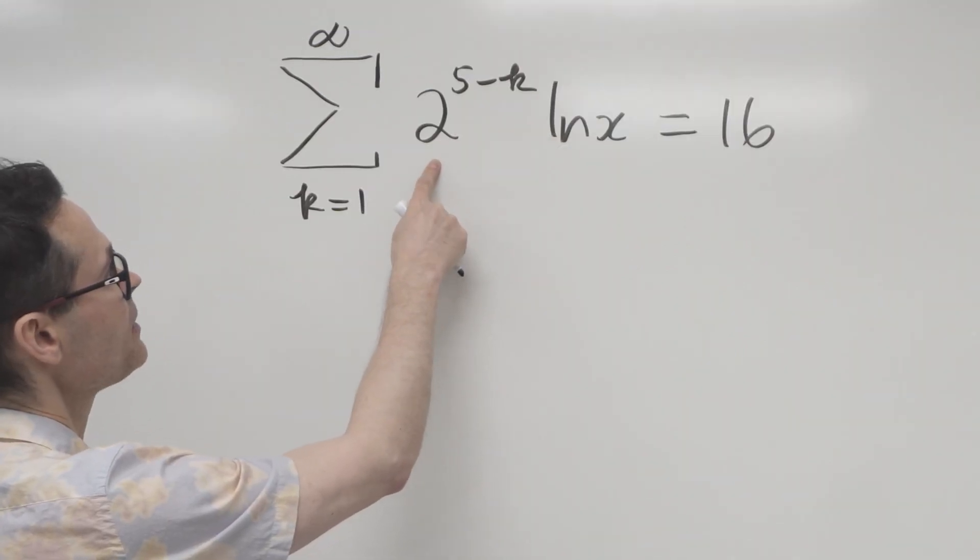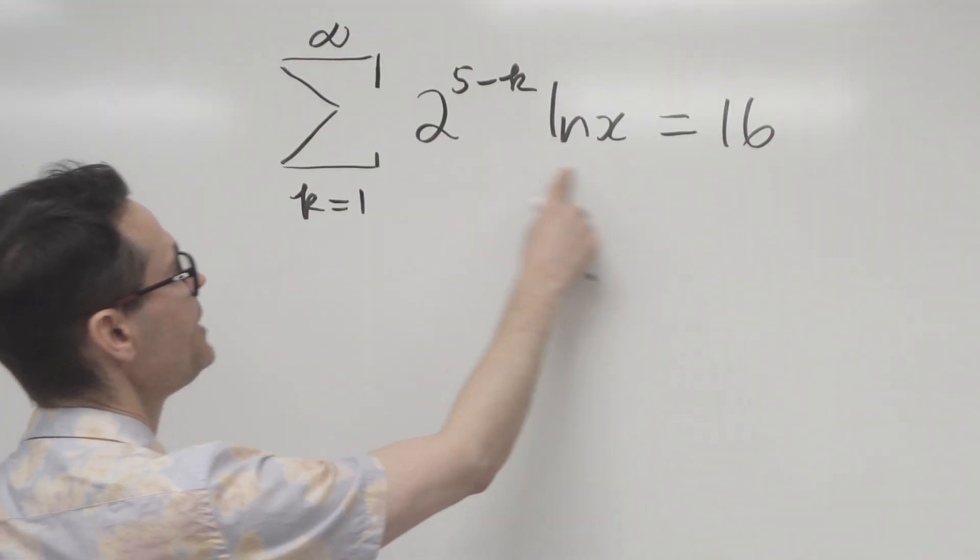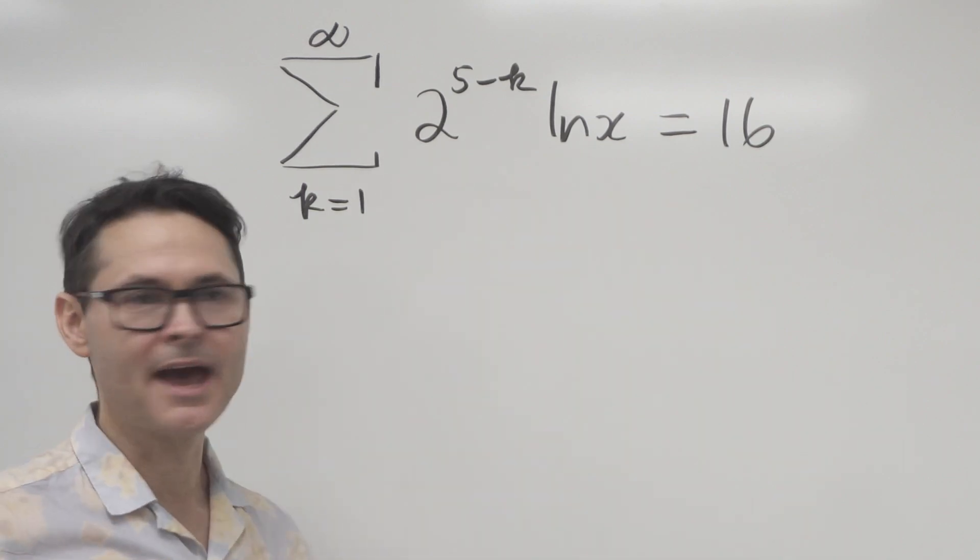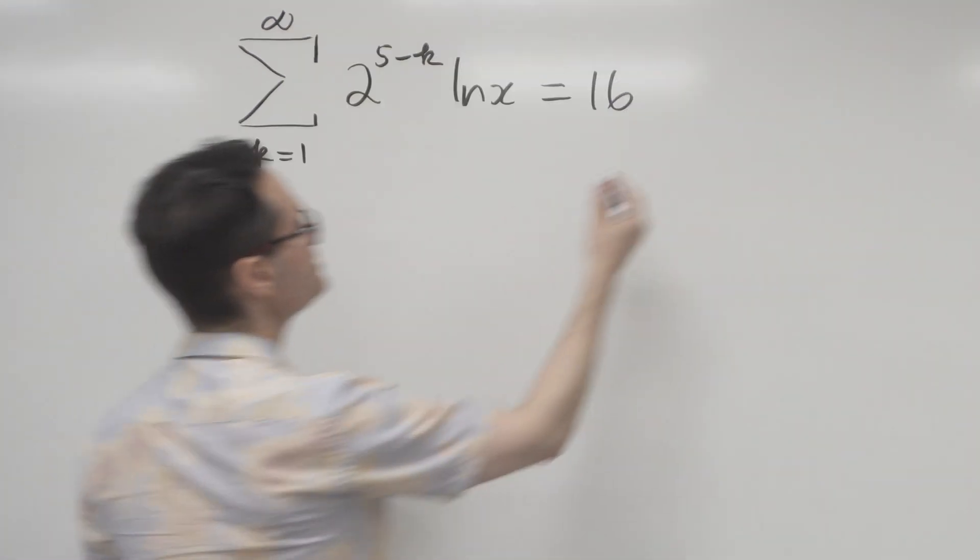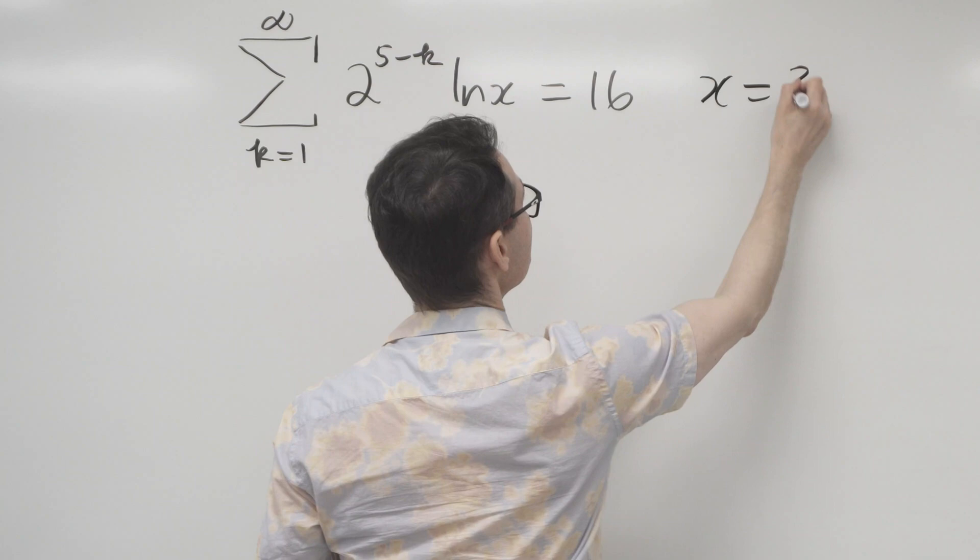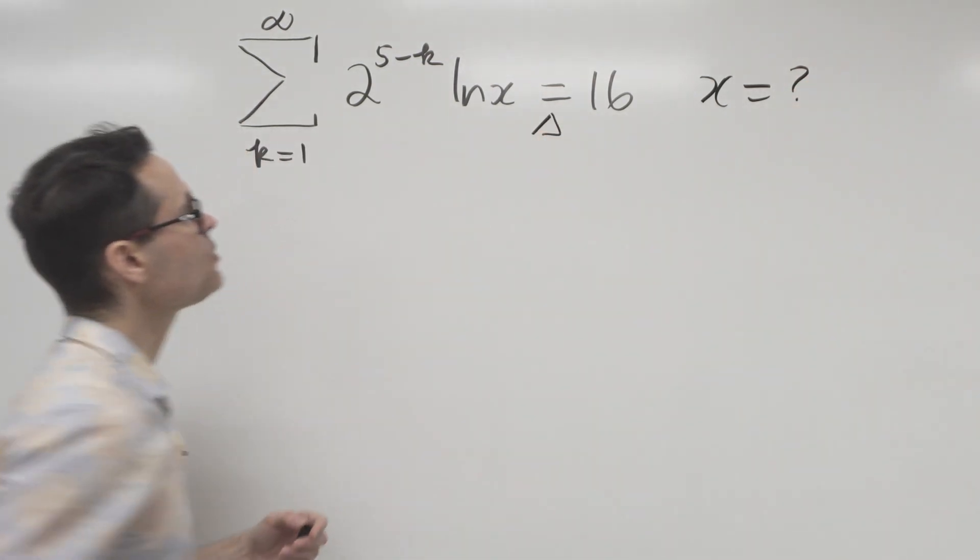It's got this as part of the summation equation, and also it has a ln x. So the unknown here is x. So we want to know what x is equal to in order to balance this equation.